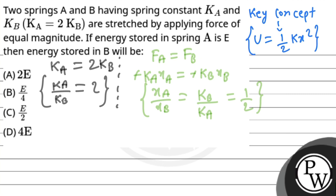So energy stored in the first case, UA is half KA XA squared.